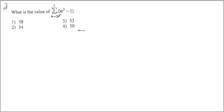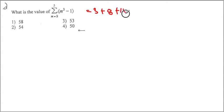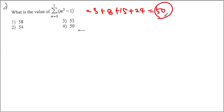Let's look at this one. When m goes from 2 to 5: when m equals 2 we get 3, when m equals 3 it becomes 8, when m equals 4 it becomes 15, and when m equals 5 it becomes 24. When you add them all up, we end up getting 50 as our answer.